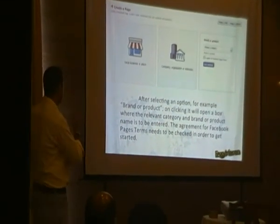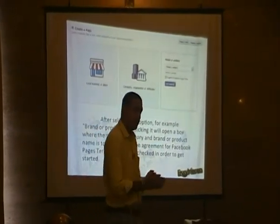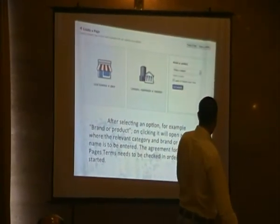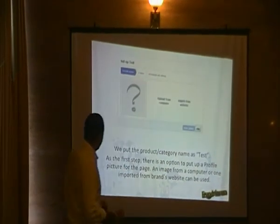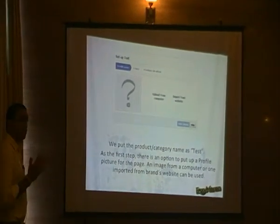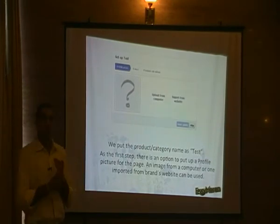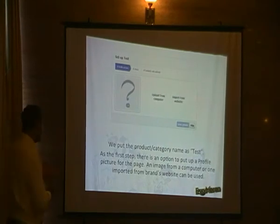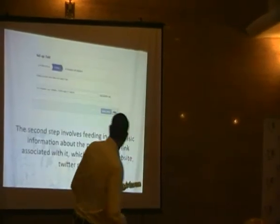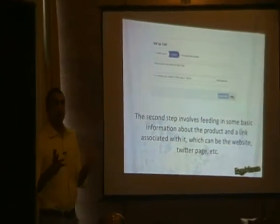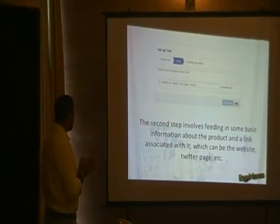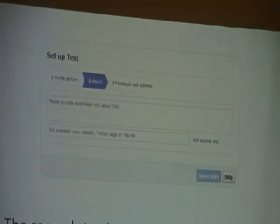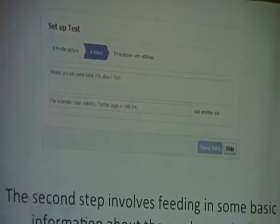Let's assume we are setting up a page for 'Cute Little Puppies,' a dog grooming service. Facebook asks whether it's a local business or place, or a company or organization — relevant for multinational corporations with multiple offices. The first step is uploading a profile picture: you can upload from your PC, pull it from your company website, or use another source. Then you add basic information about your company — website, Twitter links — so users can cross-connect your social profiles.